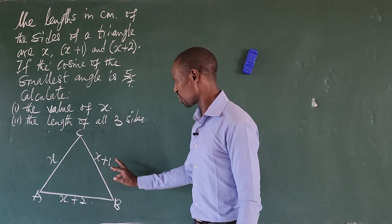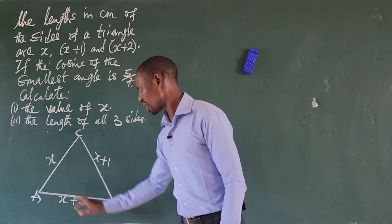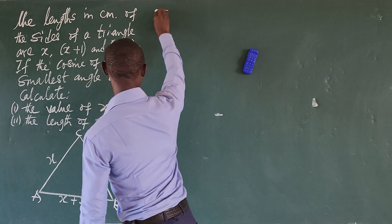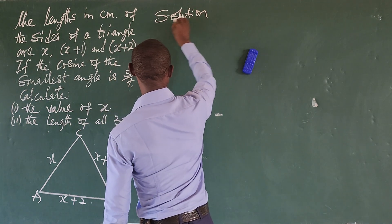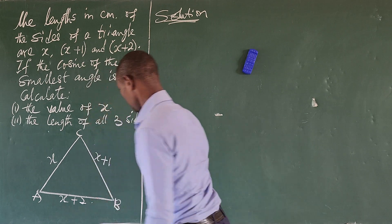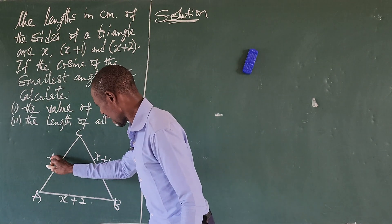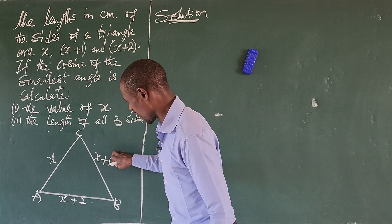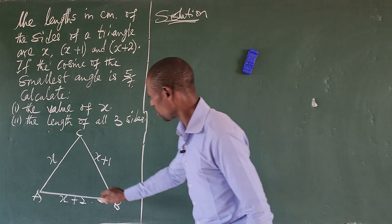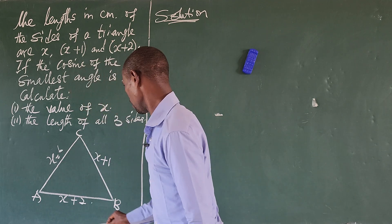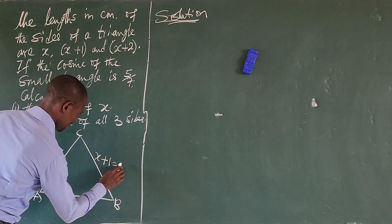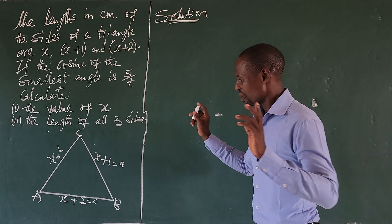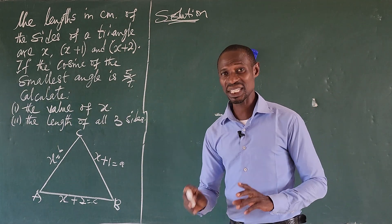Now look at the diagram — we have triangle ABC. Here we have x plus 1, here we have x plus 2, and here we have x. Now this side is facing this angle, this angle is facing this, and this side is facing this angle. So automatically we're going to have this labeled small letter b, this small letter a, and this small letter c.